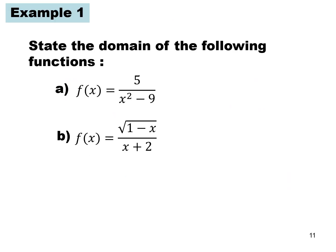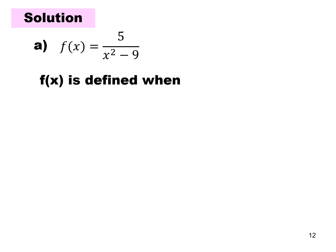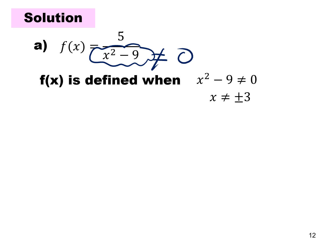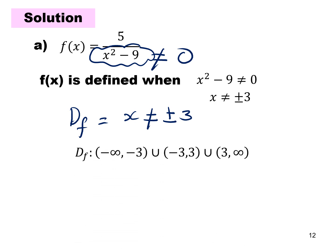Example 1: state the domain of the following functions. For part (a), f(x) = 5/(x² − 9). Since this is a rational function, the denominator x² − 9 cannot equal zero, so x² ≠ 9, meaning x ≠ ±3. The domain of f is x ≠ ±3, written in interval form as (−∞, −3) ∪ (−3, 3) ∪ (3, ∞).